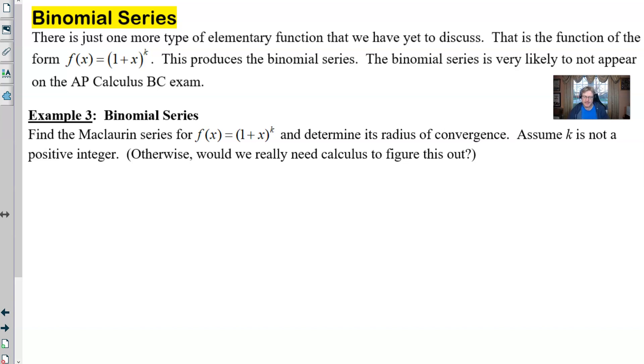You're asked to find the Maclaurin series for (1+x)^k and determine the radius of convergence. We're going to assume that K is not a positive integer, because after all, would we really need calculus to take X plus one to the fifth power. We could just expand that out. But we would probably do this more likely for cases of K that are a little bit trickier, like the fractional values.